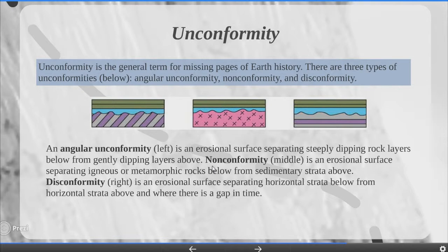Unconformity. Unconformity is a general term for missing pages of earth's history. There are three types of unconformities: angular unconformity, non-conformity and disconformity. An angular unconformity is an erosional surface separating steeply dipping rock layers below from gently dipping layers above. Non-conformity is an erosional surface separating igneous or metamorphic rocks below from sedimentary strata above. Disconformity is an erosional surface separating horizontal strata below from horizontal strata above, where there is a gap in time.